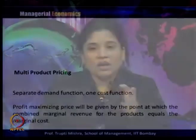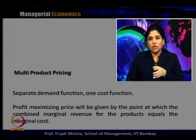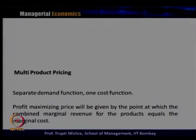So the price has to be decided on the basis of the combined cost for both products. In this case, we get separated demand functions but only one cost function. The profit-maximizing price will be given by a point at which the combined marginal revenue for the products equals the marginal cost, or we can say that the marginal revenue of each product equals the combined marginal cost. We will take a graphical explanation to understand this — deriving the profit-maximizing price and output in the case of multiproduct pricing.